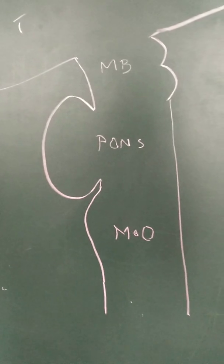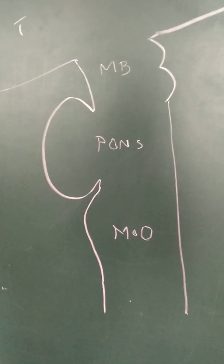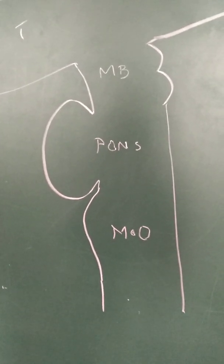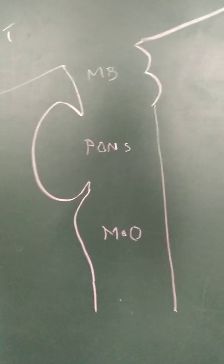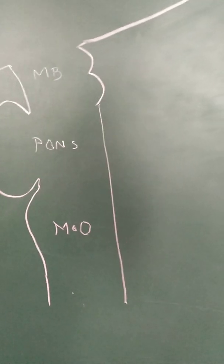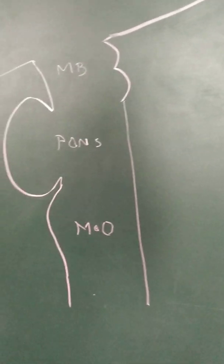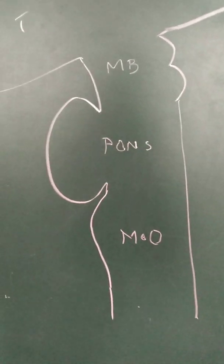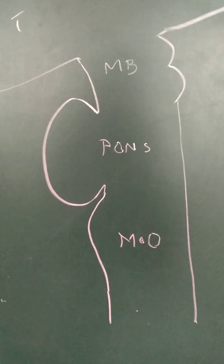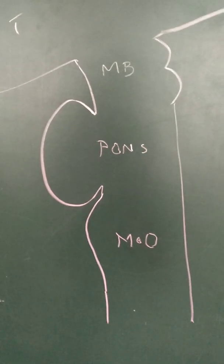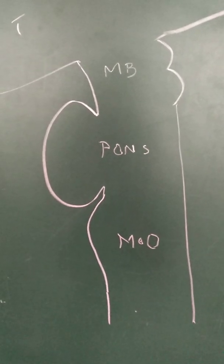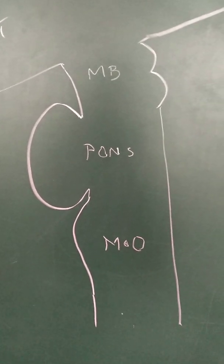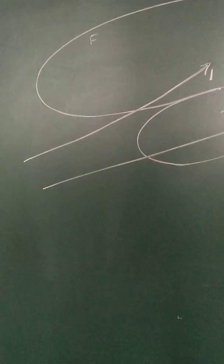The parts of the brainstem, from above downwards, are the midbrain, pons, and medulla oblongata. Behind this there is the cerebellum, which is not shown intentionally. Now let's see the position of the cranial nerve nuclei.